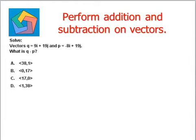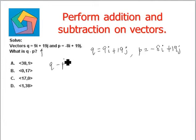Let's look at the next question. Solve vectors q is given to us as 9i plus 19j, while vector p equals negative 8i plus 19j. We have to find out q minus p, the difference of the two vectors.